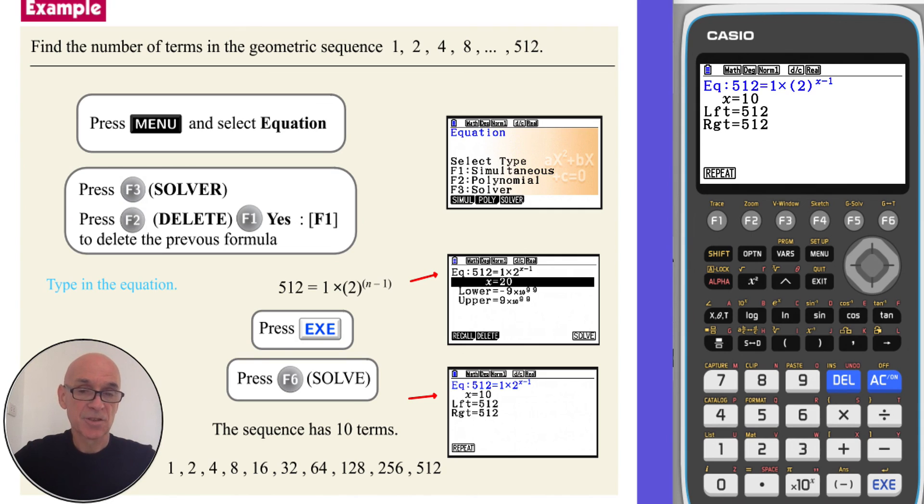And as it's just a small number of terms, we can list out the terms in the sequence to verify our answer, as shown.